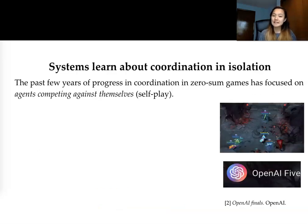In the past few years, we've seen significant progress made in coordination algorithms for zero-sum games. A lot of this progress has been focused on self-playing algorithms, where agents are learning about coordination by competing against themselves.